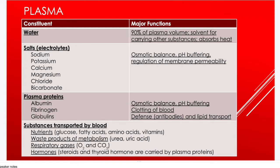Salts, or electrolytes — including sodium, potassium, calcium, magnesium, chloride, and bicarbonate — help regulate osmotic balance and pH buffering, keeping blood pH in the narrow range of 7.35 to 7.45. They also regulate membrane permeability. Plasma proteins include albumin, which helps with osmotic balance and pH buffering, and fibrinogen, which helps with blood clotting and assists the platelets.